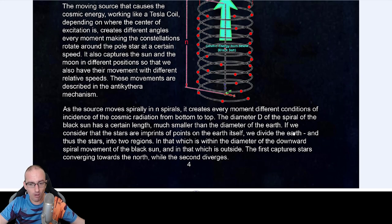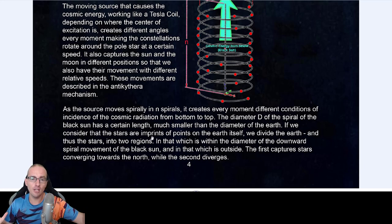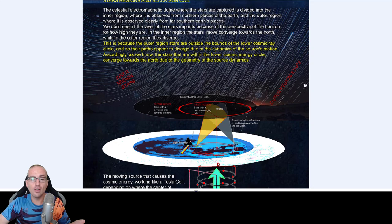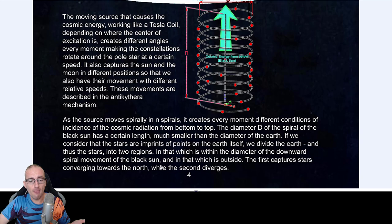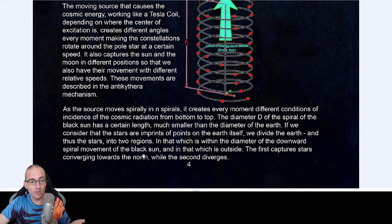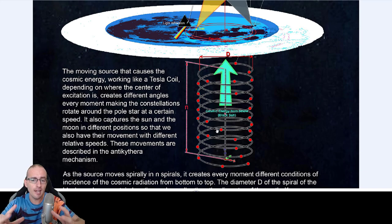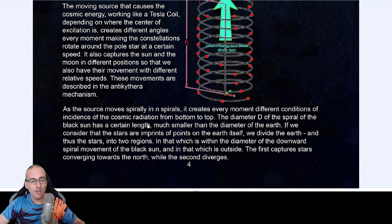The diameter is smaller. If we consider that the stars are imprints, the radiation hits the earth and the oceans and then you have the imprints on the ceiling, on the electromagnetic dome. If we consider that the stars are imprints of points of the earth itself, the energy spots and the great depths, we divide the earth and thus the stars into two regions. That's why you have the inner region and the outer region because it's so big, but the black sun here is so small in comparison with the earth. So you have two regions: that which is within the diameter of the downward spiral movement, the stuff that's contained within the diameter of that movement of the black sun, and then we have the one which is outside of that movement.